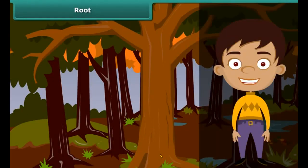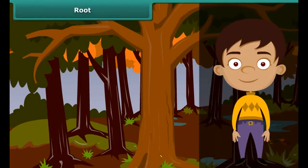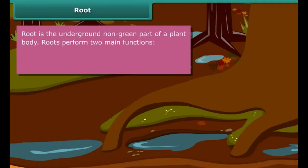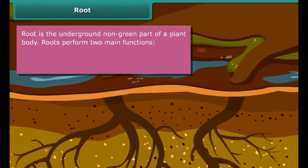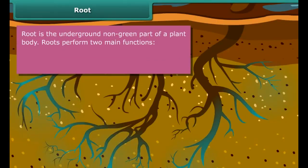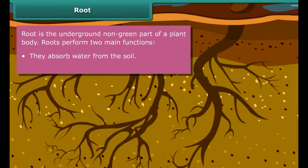Let us begin our discussion with plant roots. The root is the underground, non-green part of a plant body. Roots absorb water and minerals from the soil, which are crucial for the survival of a plant. They also attach a plant to the soil for its entire life.